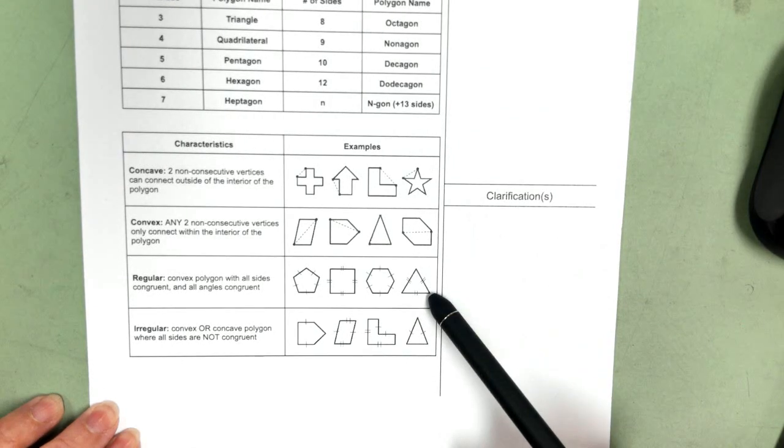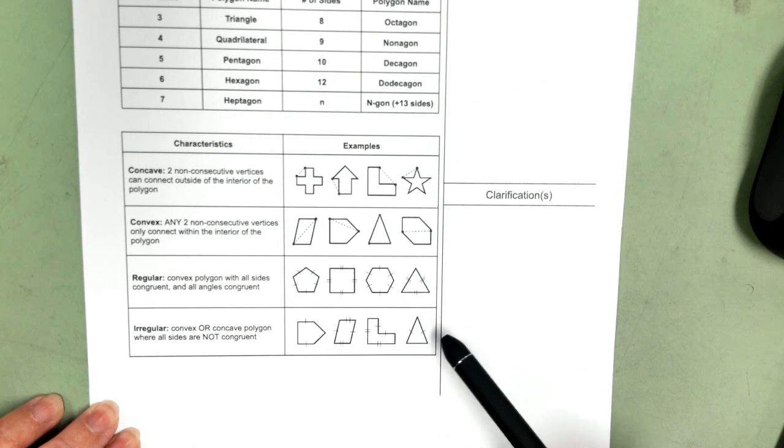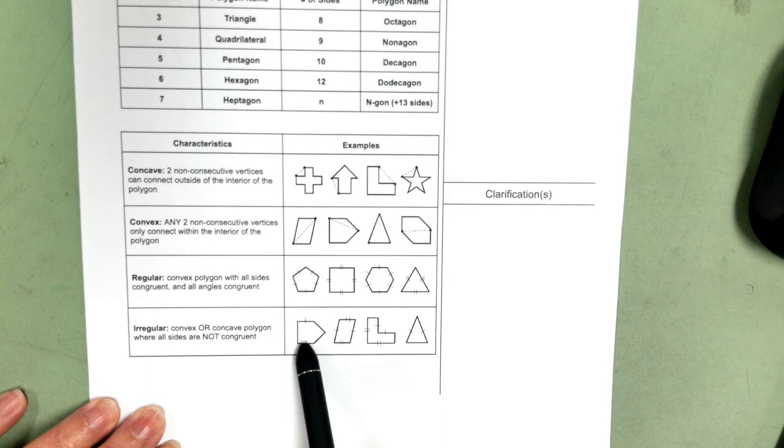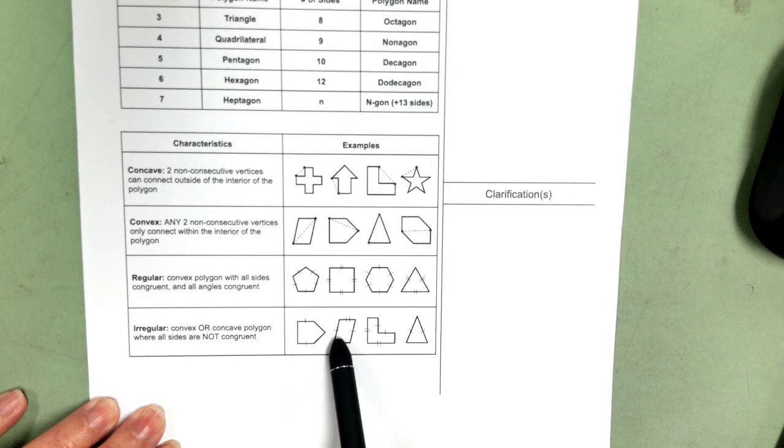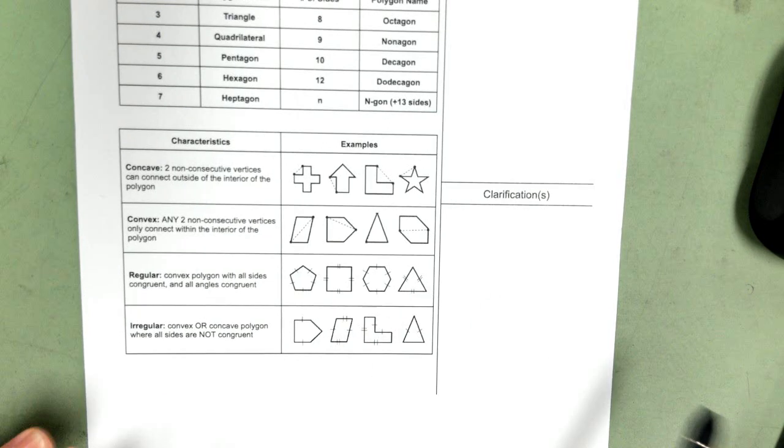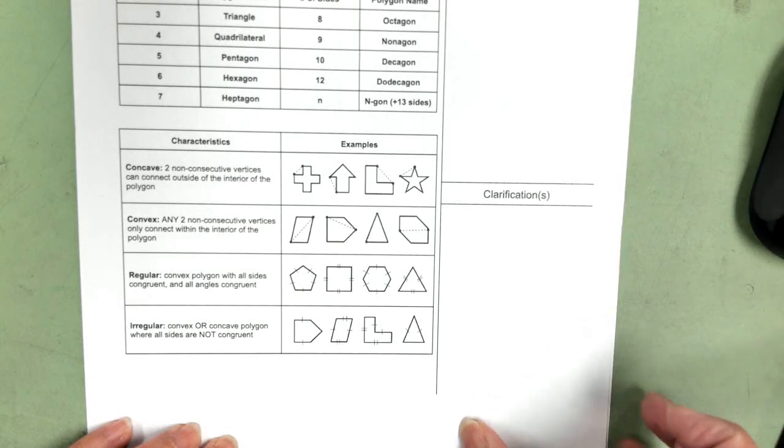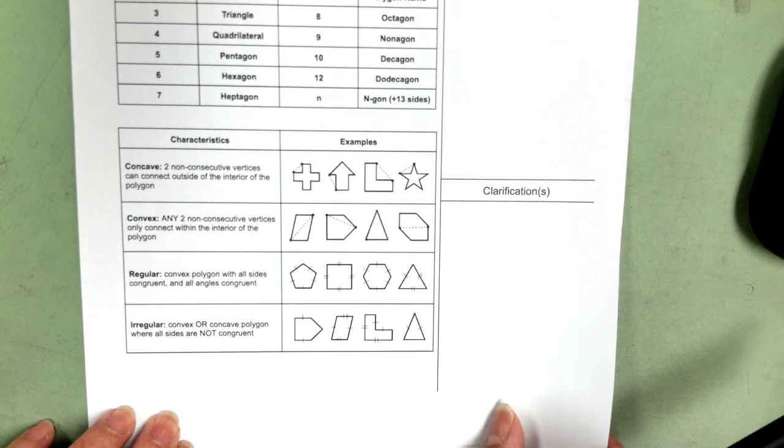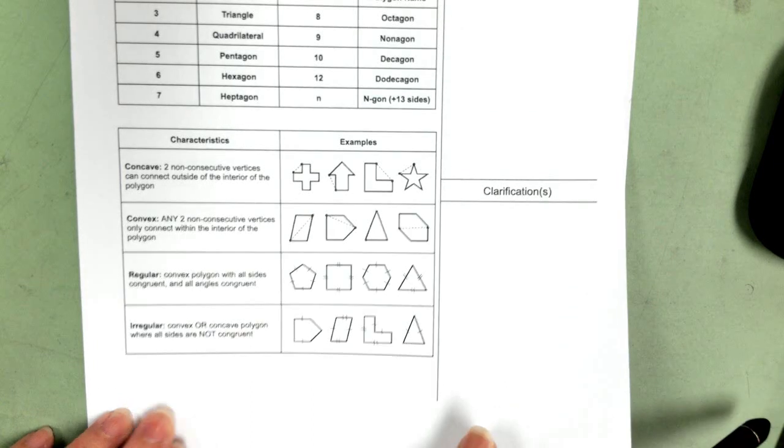Regular polygons have all sides congruent and all angles congruent. Irregular convex or concave polygons have sides that are not congruent. So this would be an irregular convex. This would be an irregular concave because we can connect this vertex to that vertex and it will be outside. So I recommend that you learn the names of the polygons and recognize whether it's concave, convex, regular, or irregular.